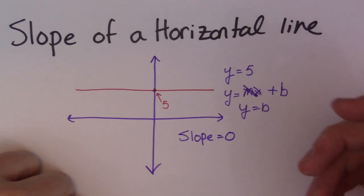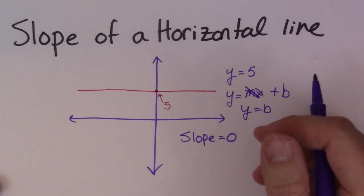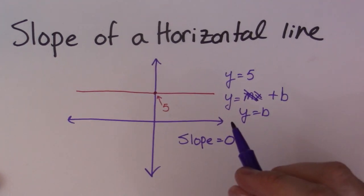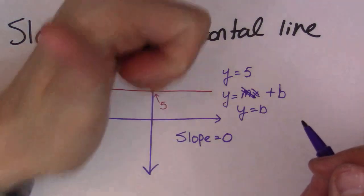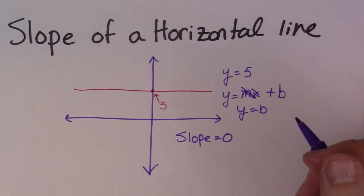So, that is the slope of a horizontal line. That is the equation of a horizontal line. You need to know it for linear functions and things like that. So, hopefully this video helps you guys. Thanks for watching. I will see you guys in class.